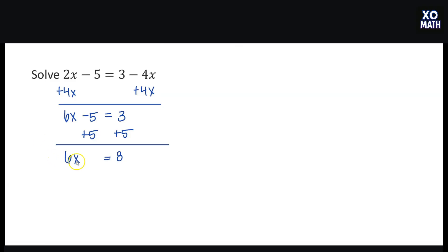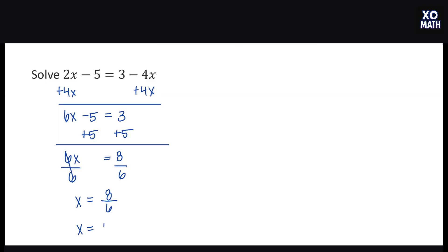The last step to get x by itself is to divide by 6. I have 6 times x, so I divide by 6 and get x is equal to 8 over 6. This fraction is not in lowest terms, so I'll divide by 2 to get x is equal to 4 thirds.